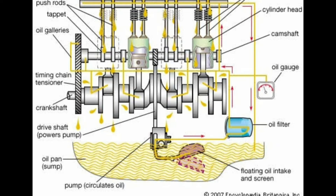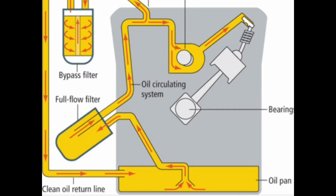The first function of the engine oil is to lubricate all the internal parts of the engine, including the crankshaft, the camshaft, and parts of the cylinder head. The crankshaft is the main part that has to be lubricated, along with the camshafts. The cylinder head parts are also among the more important parts that have to be lubricated with engine oil. That would be the first function — lubricate the internal metal parts of the engine.